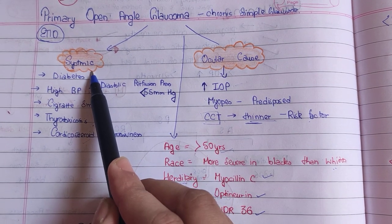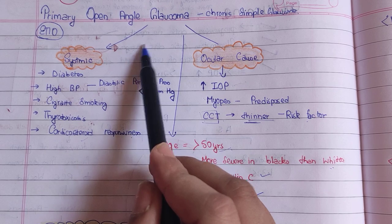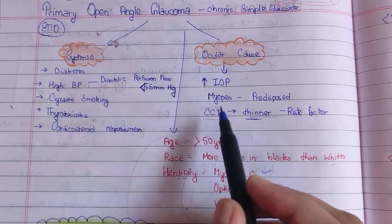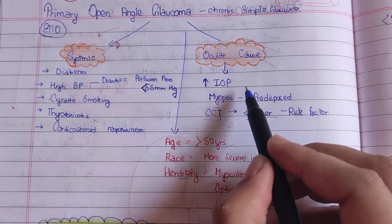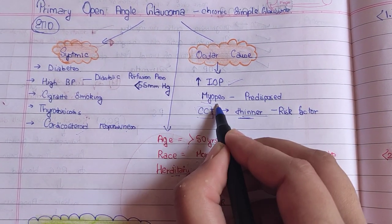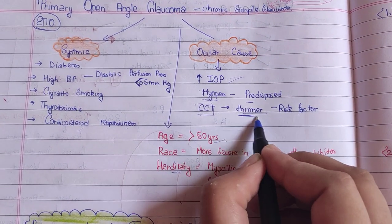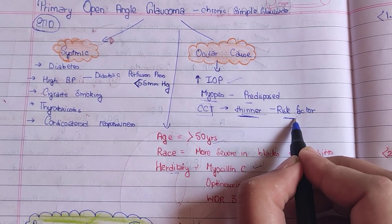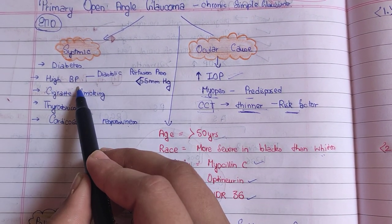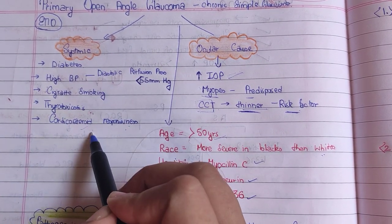Looking at its causes — since the angle is open and not narrow, why might drainage be affected? Ocular causes include: increased myopia (myopic eyes are more predisposed), and central corneal thickness (the thinner it is, the greater the risk factor). Systemic causes include diabetes, high blood pressure, cigarette smoking, thyrotoxicosis, and corticosteroid responsiveness.